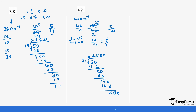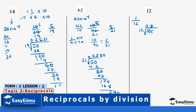Now let's look at another number using the reciprocal long division method: 12. This is a whole number — it doesn't have a decimal. So the reciprocal will be 1 over 12, which is the same as 1 divided by 12. We add a decimal to get 10, but the value is still very low, so we add another zero, then another zero.